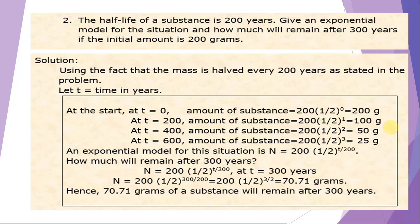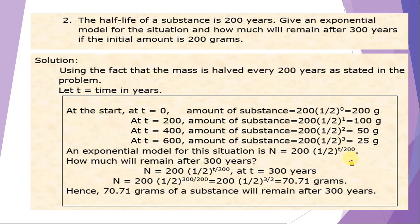At t equals 200, the amount becomes 200 times (1/2) raised to 1, or 100 grams. At t equals 400 — note the time increments by 200 years because that's the half-life — the amount is 50 grams. At t equals 600 it becomes 25 grams. The exponential model is: N equals 200 times (1/2) raised to t over 200.